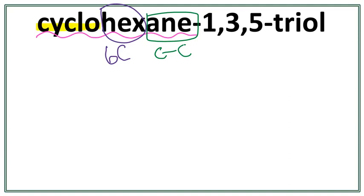This cyclo- tells us that these carbons are arranged in a ring. So when we arrange 6 carbons in a ring, we end up with a hexagon. Let's draw our hexagon and number the carbons.